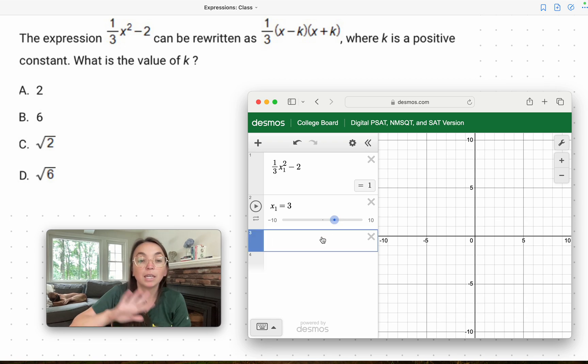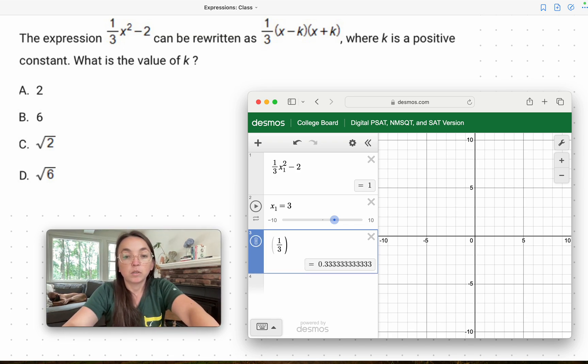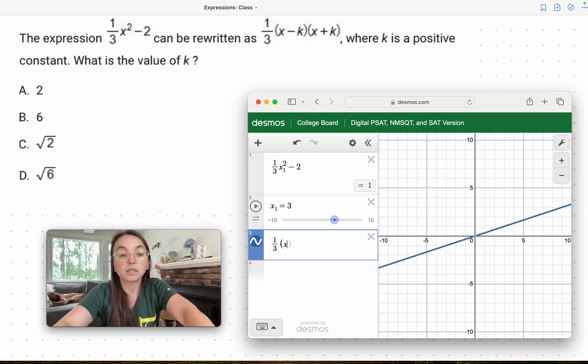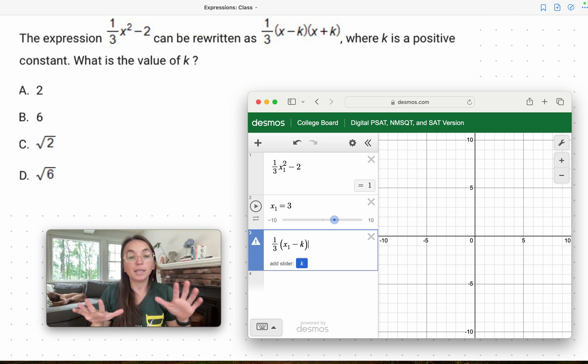So what we want to do now is input the other half of the equation. So this equation can be rewritten in this other form: 1 divided by 3 times x sub 1 minus k, x sub 1 plus k. The k does not need a sub 1 because k is not part of the coordinate plane.